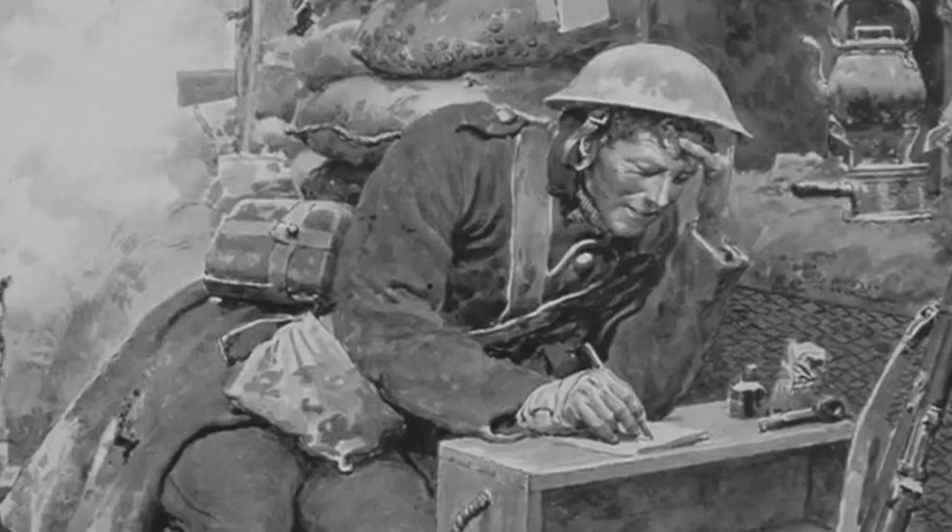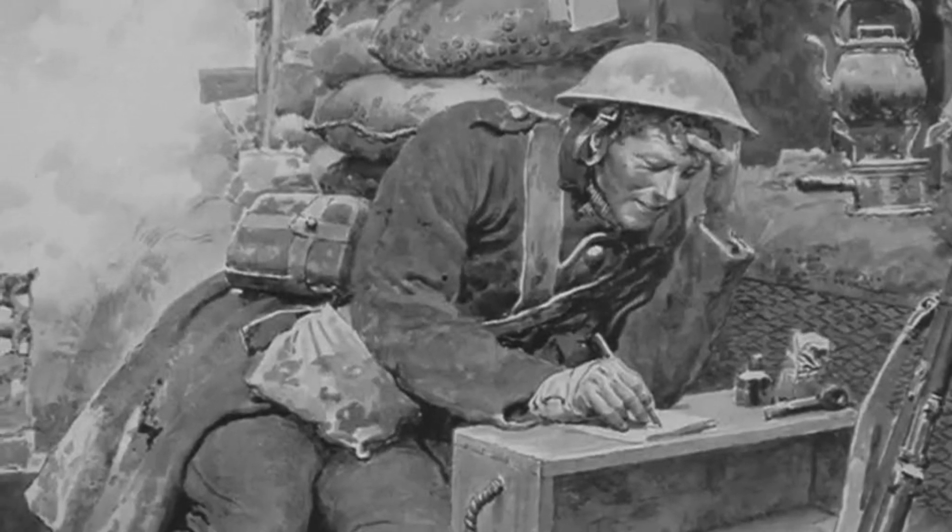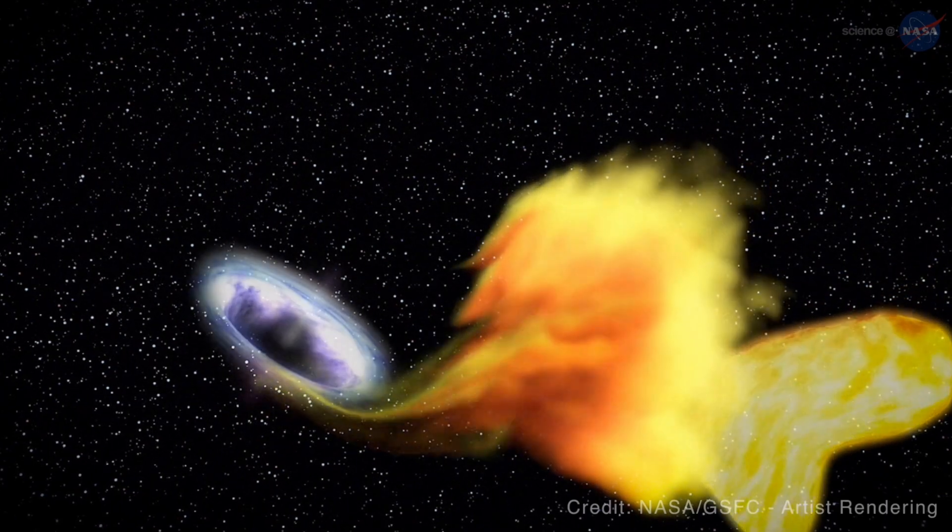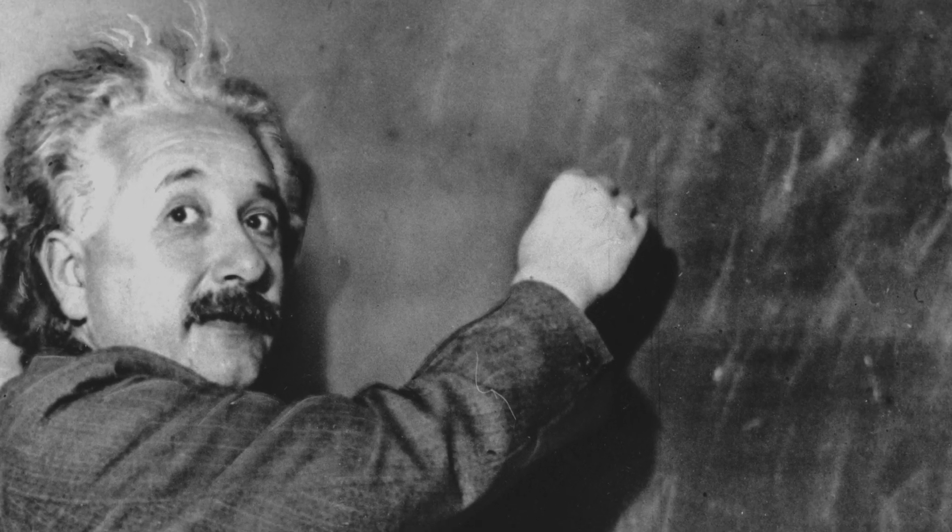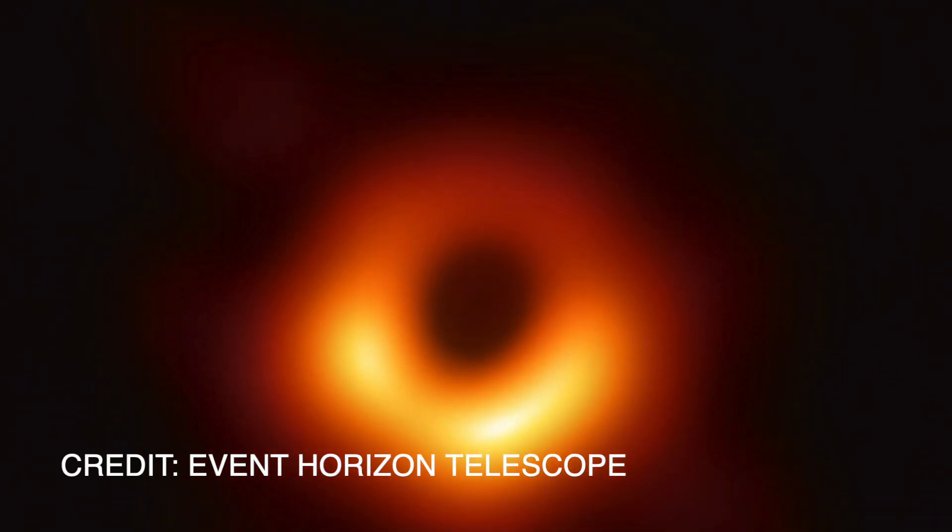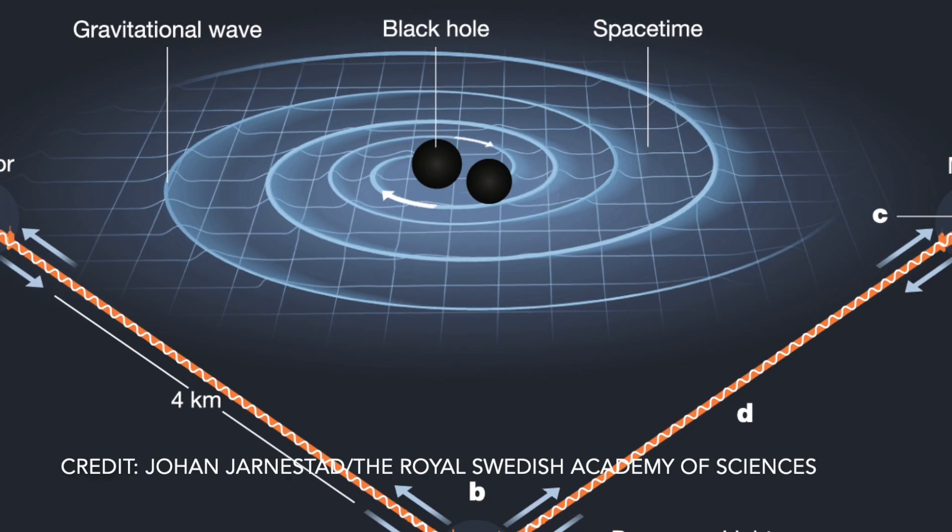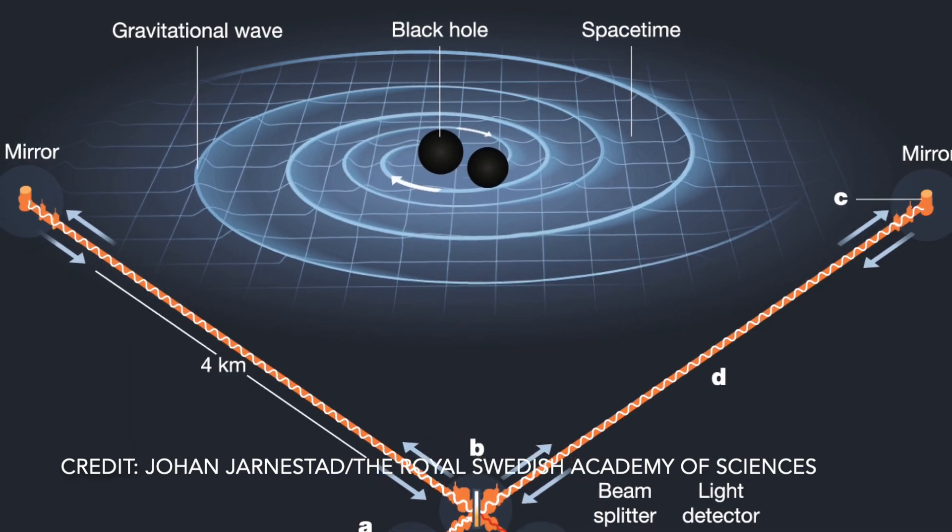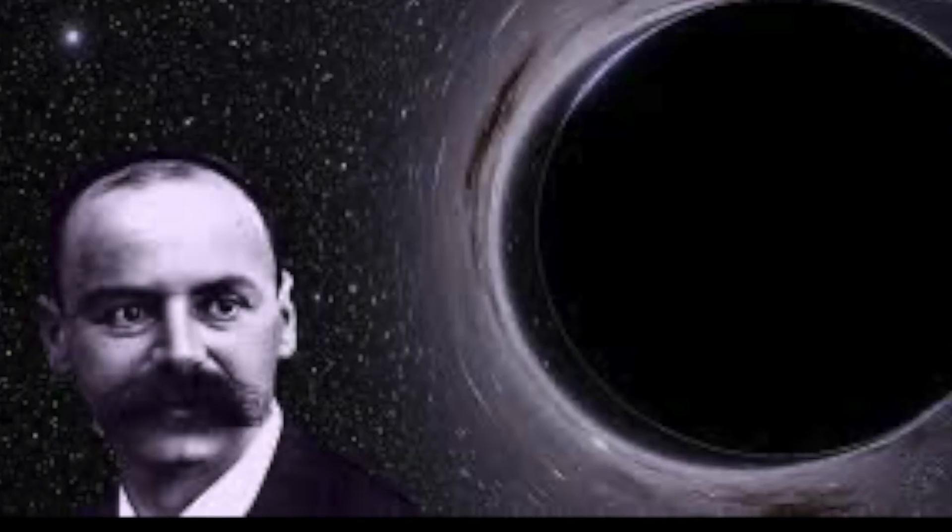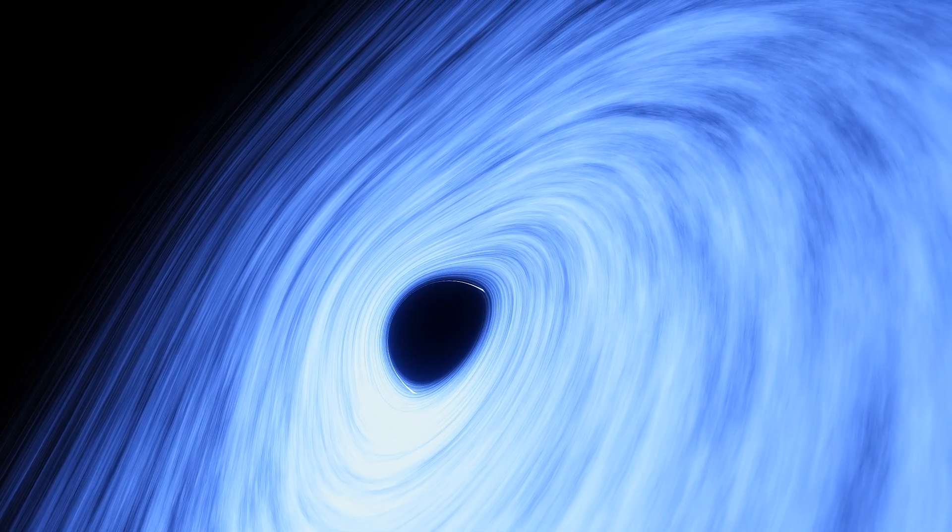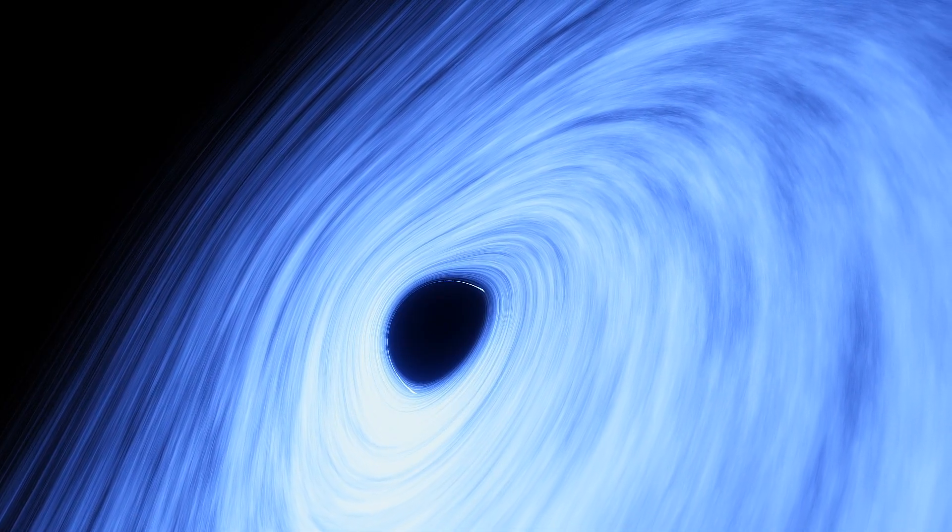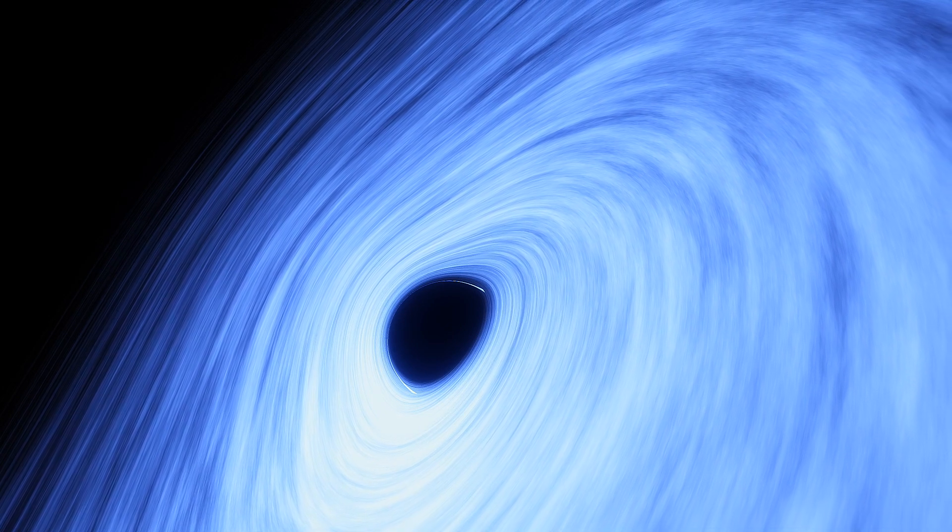What began as a theoretical puzzle in the middle of World War I has now become one of the most studied objects in astrophysics. Over a hundred years later, we observe the shadow of a black hole, confirm their existence through gravitational waves, and yet Schwarzschild's singularity remains one of the biggest mysteries in physics. Could it be that the key to understanding nature lies at the heart of the black hole that Schwarzschild arrived at so long ago?